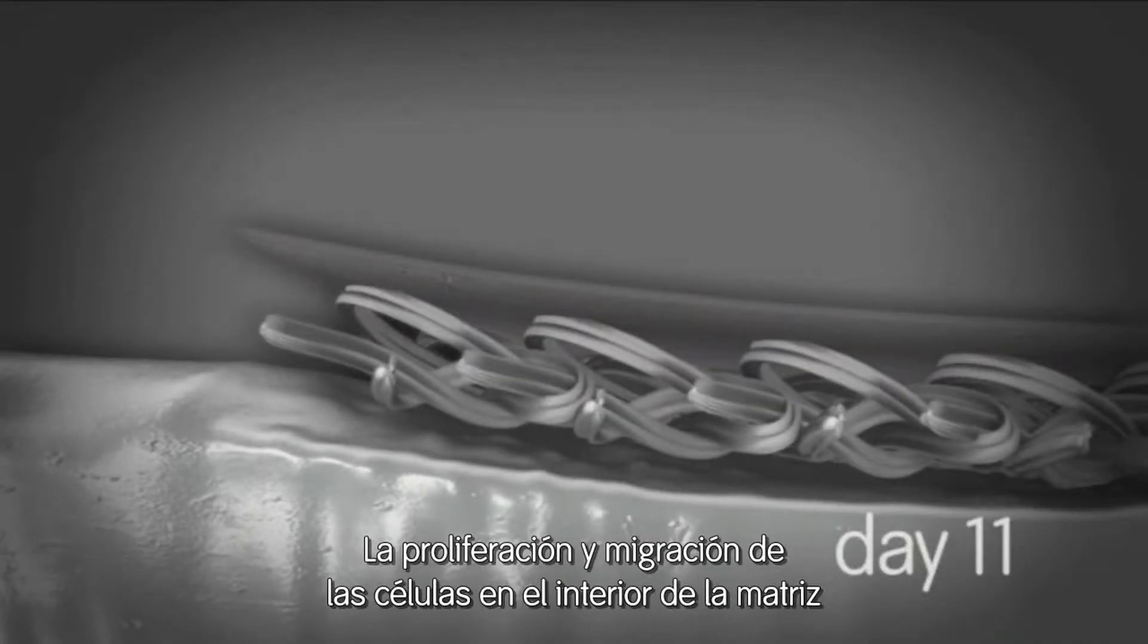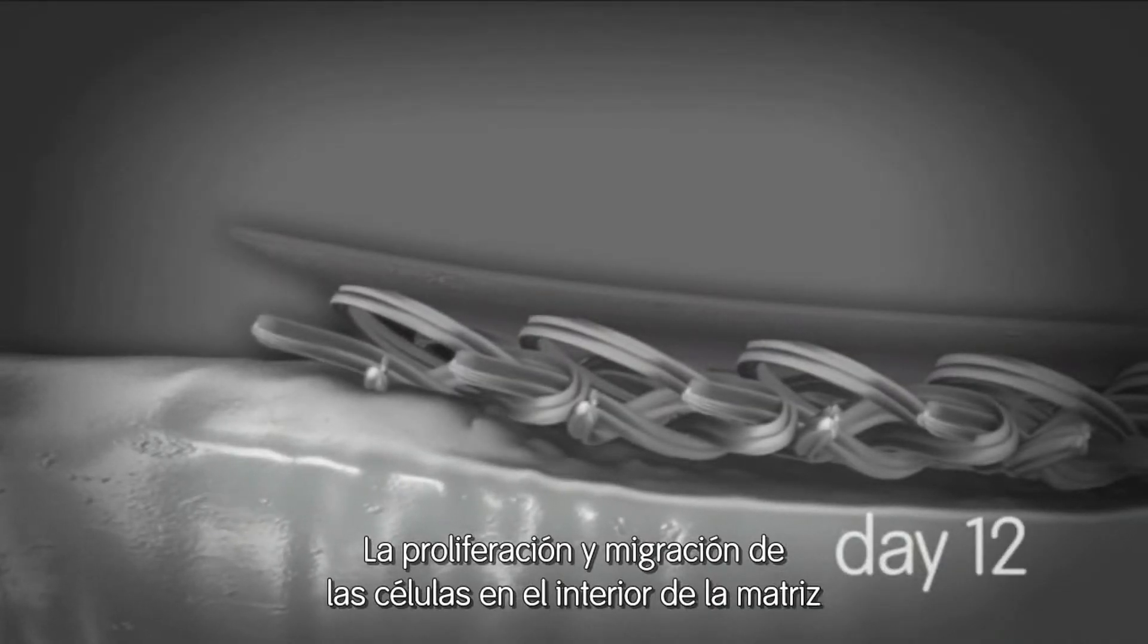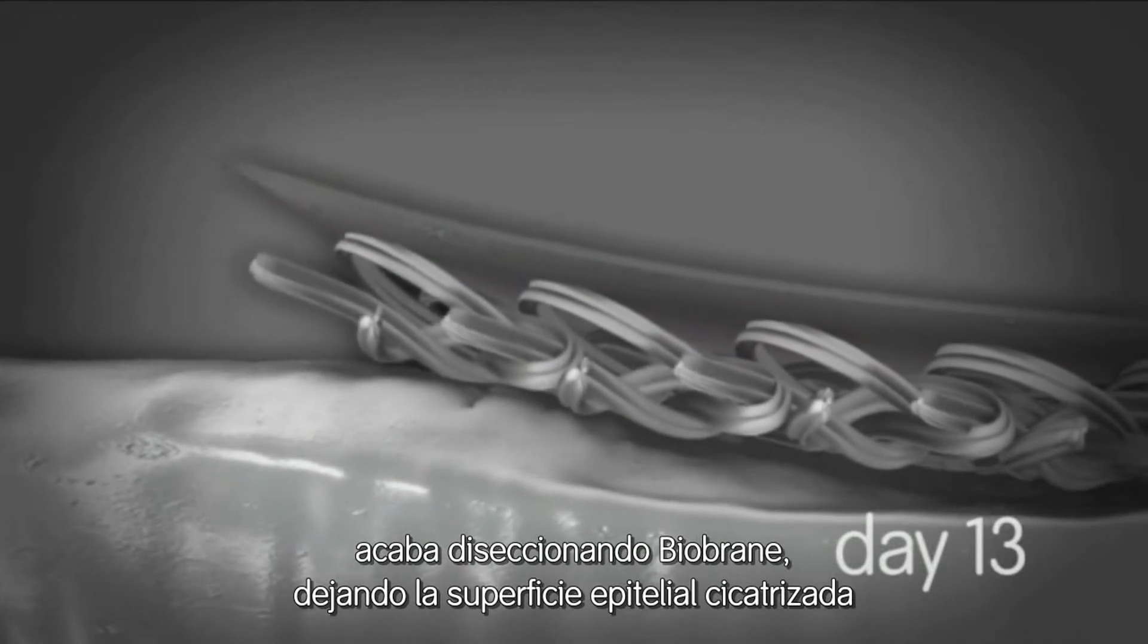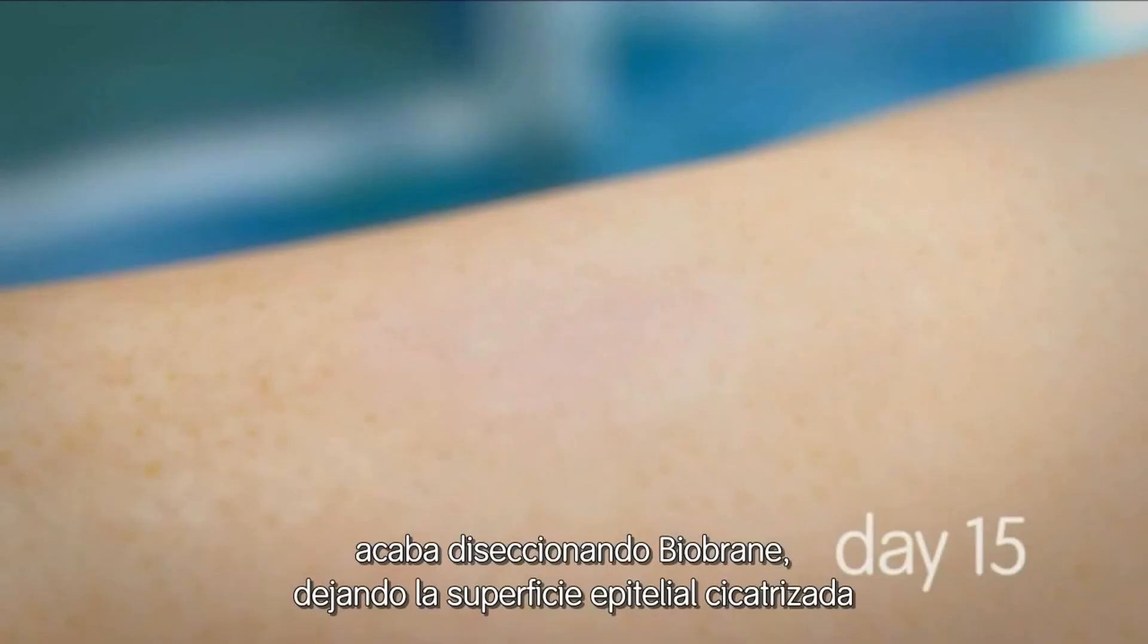Cell proliferation and migration along the inner aspect of the matrix eventually dissects the Biobrane, leaving a healed epithelial surface.